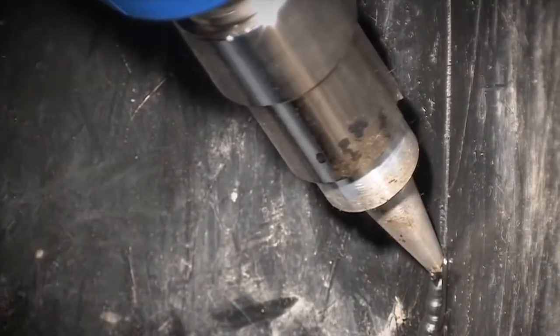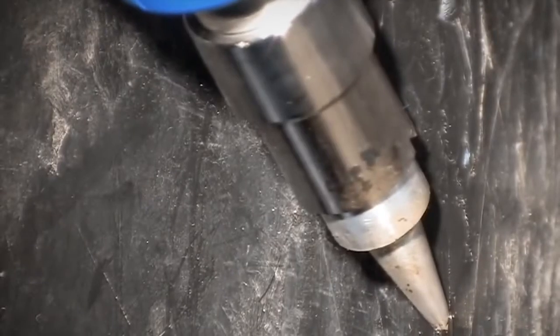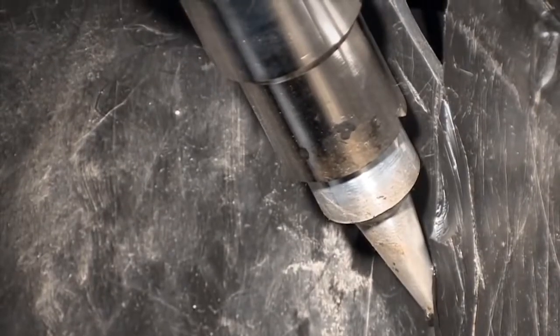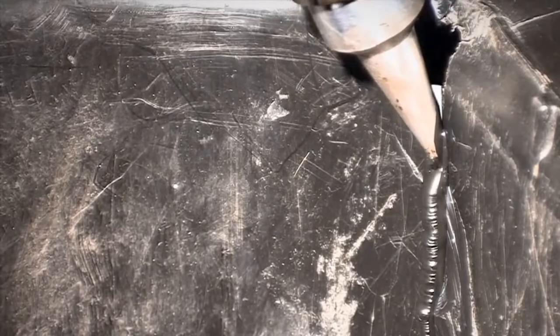Now I'm going to weld from the bottom of the crack to this point up here. I have set the Drader InjectiWeld's temperature to 265 degrees Celsius. You can see how the tip melts into the plastic.